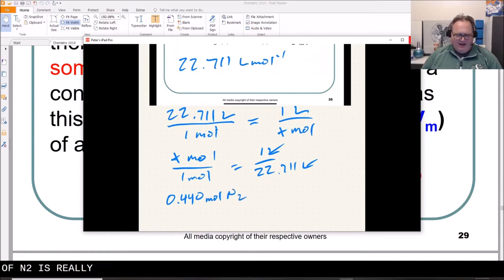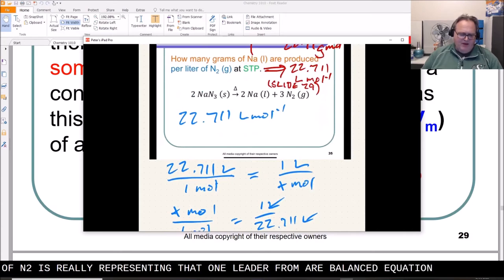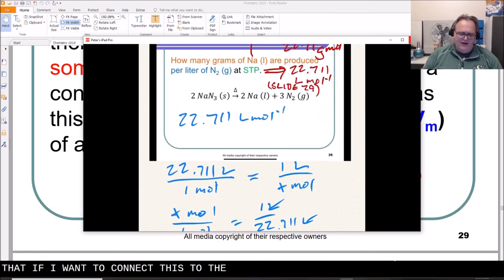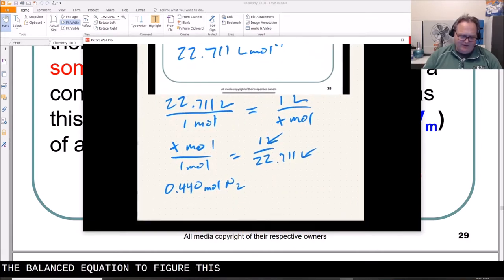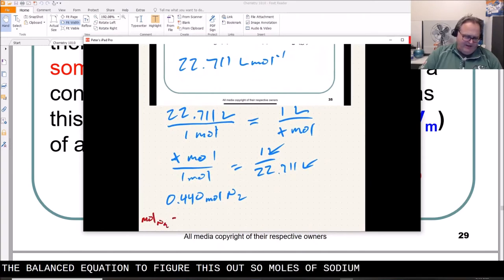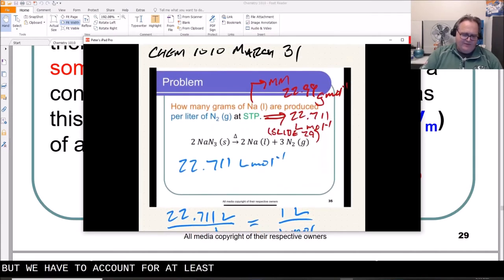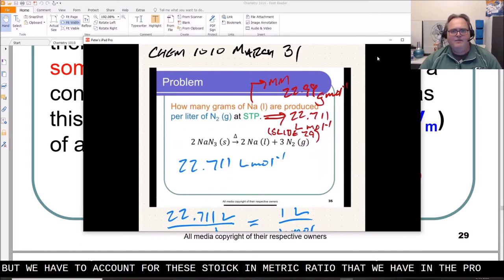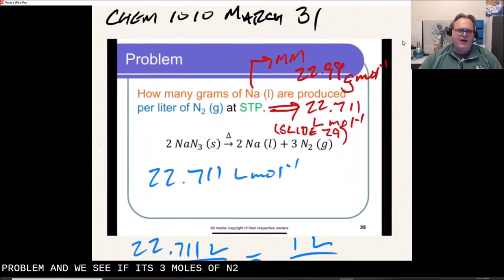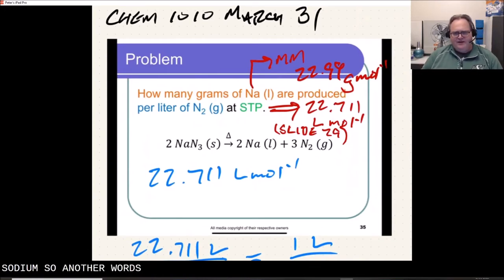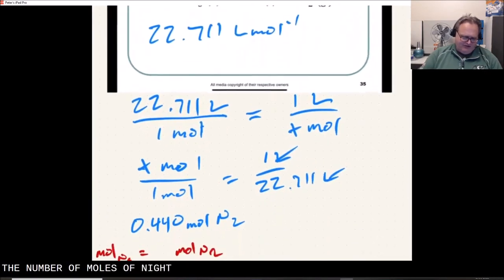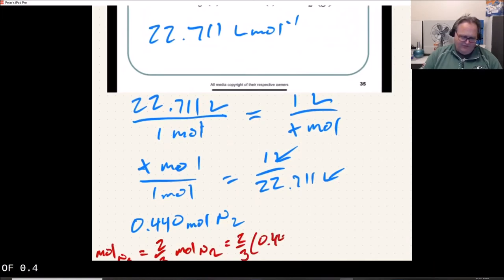N2 is really representing that one liter. From our balanced equation, we see that if I want to connect this to the number of moles of sodium, I'm going to use the balanced equation to figure this out. So moles of sodium equals the moles of N2. But we have to account for the stoichiometric ratio that we have in the problem. And we see it's 3 moles of N2 is used or is accompanied by 2 moles of sodium. So in other words, the number of moles of sodium is going to be 2 thirds the number of moles of nitrogen in this particular case.